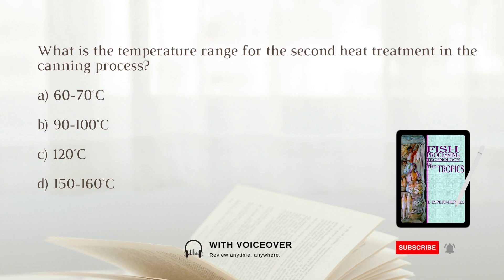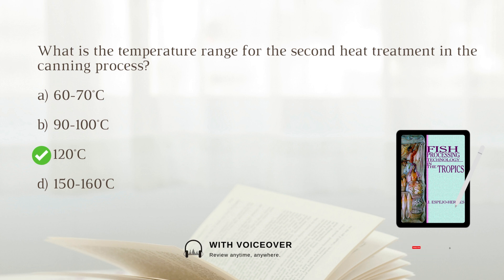What is the temperature range for the second heat treatment in the canning process? A. 60–70 degrees Celsius. B. 90–100 degrees Celsius. C. 120 degrees Celsius. D. 150–160 degrees Celsius. Answer: C. 120 degrees Celsius. The second heat treatment is carried out at temperatures around 120 degrees Celsius using steam, under pressure, or in retorts.